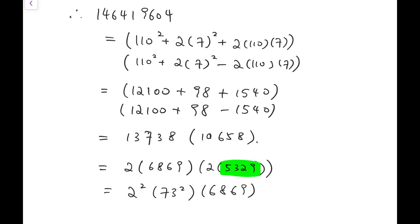The number 6869 is actually a prime. So that means this number is in fact our final answer. The largest prime factor of the number 146419604.